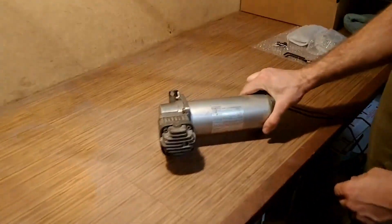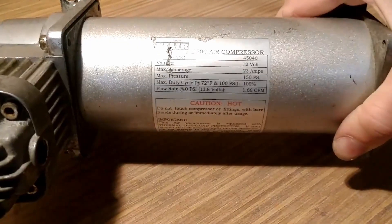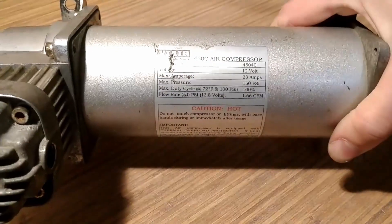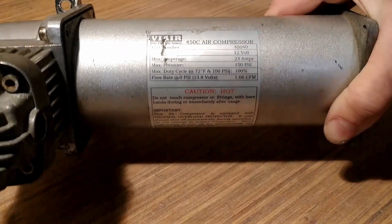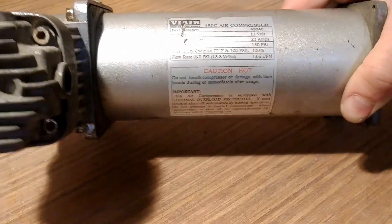But this is an older model. Look, this is a ViAir 450C air compressor. Peaks at 150 psi. It's a 100% duty cycle, 1.66 CFM.